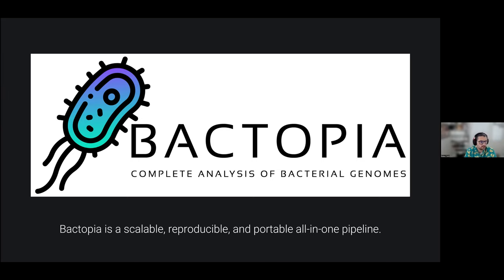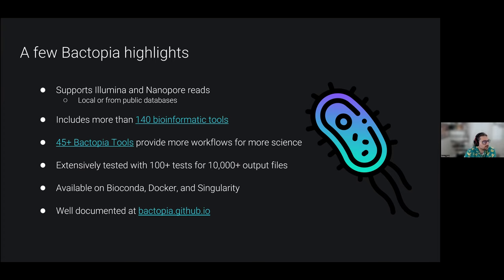Bactopia tries to include as many NFCore practices as possible to ensure reproducibility, audit logs, and more. Because it's Nextflow, it's extremely portable — you can go from laptop to HPC to all cloud platforms with just a few parameter changes. A few highlights: it supports Illumina and Nanopore reads from your local machine or from publicly available databases such as SRA or ENA. It includes more than 140 bioinformatic tools, 45 Bactopia tools which are completely separate workflows, and has been extensively tested with more than 100 tests covering more than 10,000 output files. It's easily installed through BioConda, Docker, or Singularity, and is well documented.